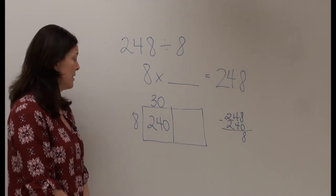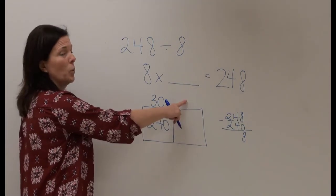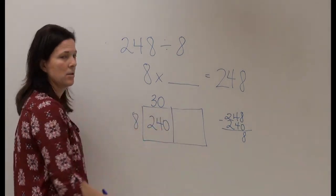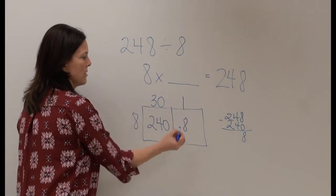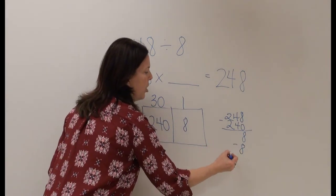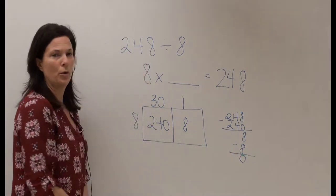So now I'm going to ask myself 8 times what factor will give me 8, and I know that 8 times 1 equals 8. So I have now placed all of my students in the rows.